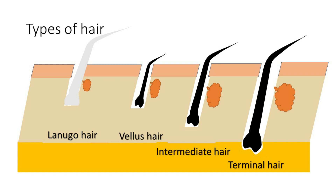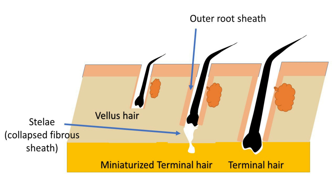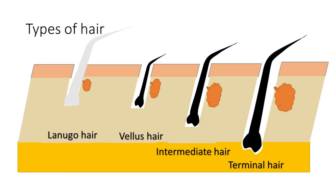Lanugo hair is thin and unmedullated. One important feature is that it is usually longer than vellus hair. Vellus hair are small hair with a diameter less than 0.03 mm and length less than 1 cm. They lack melanin and medulla and have a thin external root sheath and a short stella. In AGA, when there is progressive miniaturization of terminal hair, the stella is longer and present in the subcutaneous tissue, and the outer root sheath is thicker — features that help differentiate miniaturized terminal hair from true vellus hair.